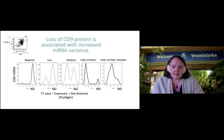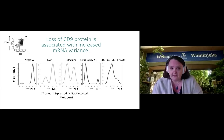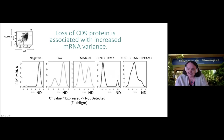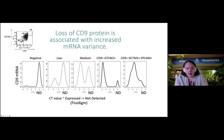Martin and Lizzie painstakingly picked individual cells across these colonies and ran single cell qPCR using Fluidigm — really old school technology. What we observed was that very high levels of protein expression correspond to very high levels of RNA expression. Because this is a PCR-based analysis, a high CT level means the product is not detected. We can see two populations of cells: a large population not expressing CD9 and a small population that is. As you move down the hierarchy of high GCTM2 and CD9 expression, you see increased variability in CD9 RNA as well.